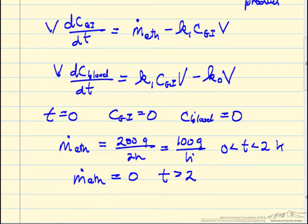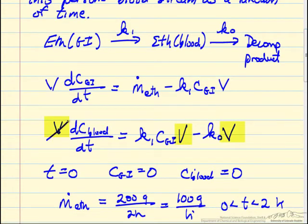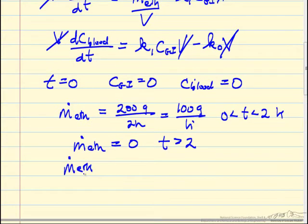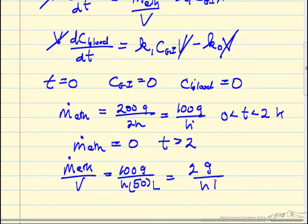What we're going to do is first simplify. For this equation, you can see we can cross out volume. We're going to divide through by volume and have an ethanol rate per volume. So this is 100 grams per hour per 50 liters. So 2 grams per hour per liter is the term we're going to put into our final equations.